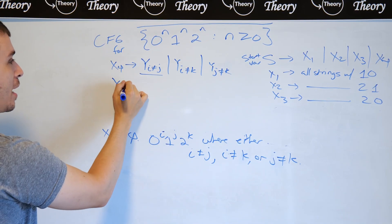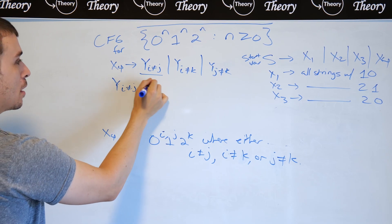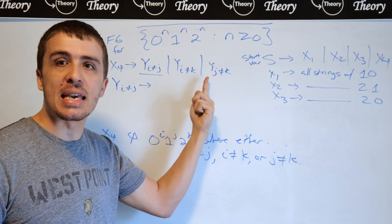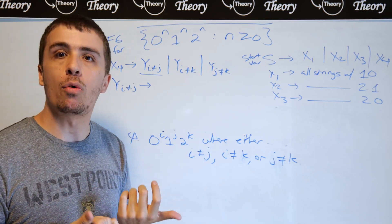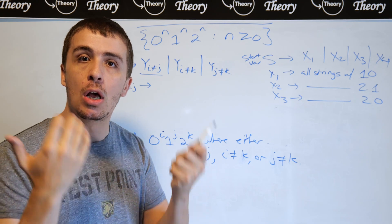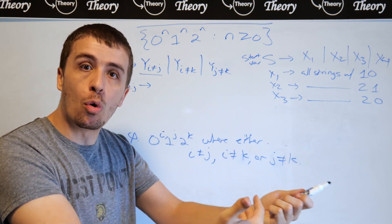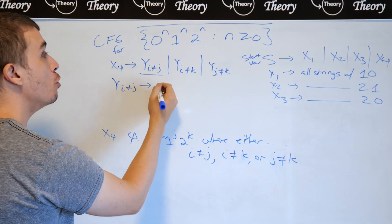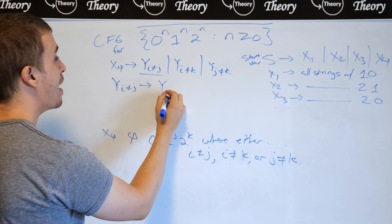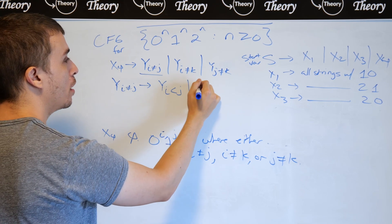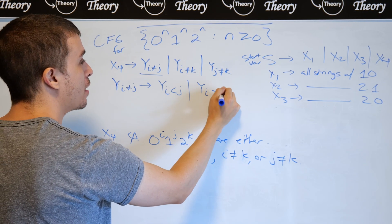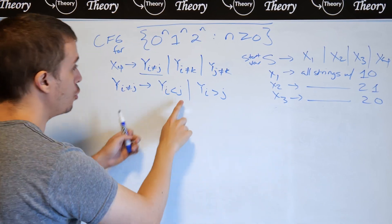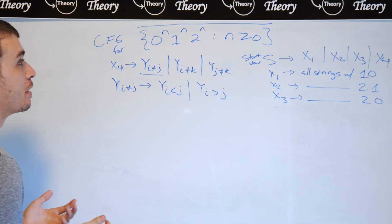So let's focus on what i not equal to j is. Well, we should know when we're making the context-free grammar, anytime we see a not equal condition, we should always transform that into one is less than the other, or the second is less than the first. So I'm going to have two more variables where I have y i less than j, or y i bigger than j. So then now we've transformed this into two variables where it's a lot easier to figure out what to do.